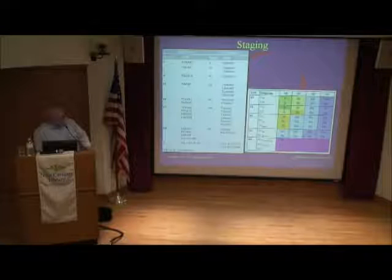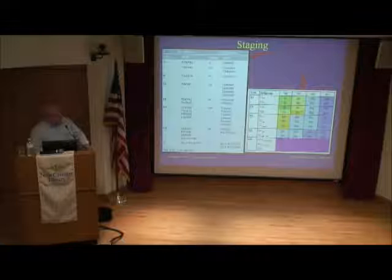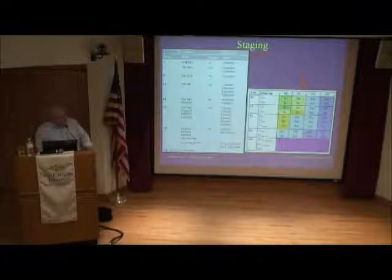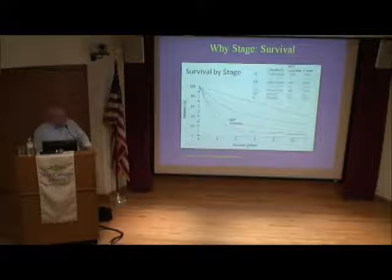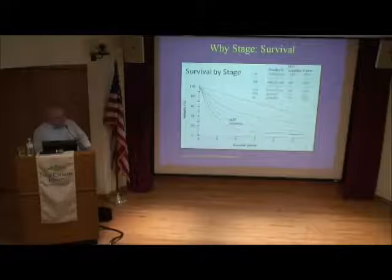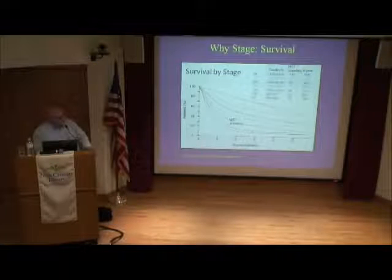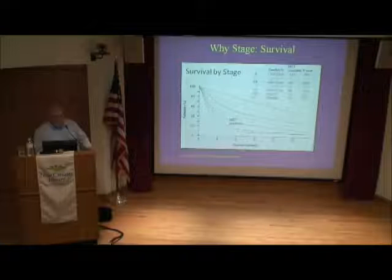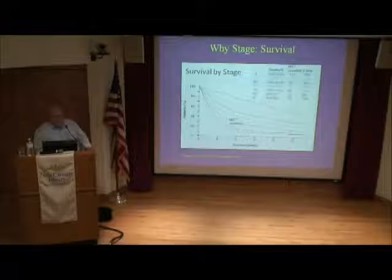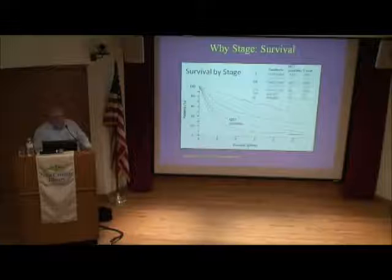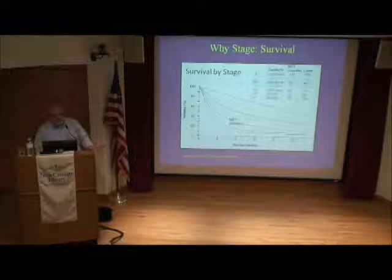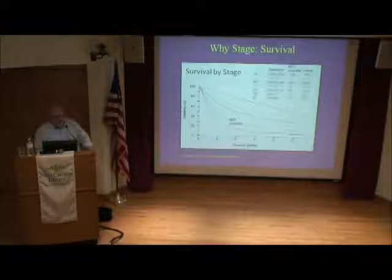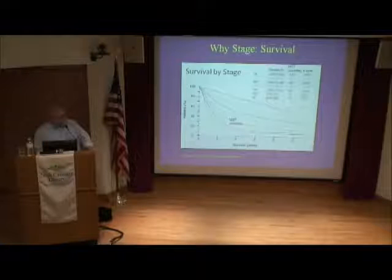Lung cancer staging uses a complex T/N/M system with ones, twos, threes, fours, A's and B's, revised every five to seven years. The higher the stage, the lower the survival. Five-year survival for stage 1A is six times that of stage 3B or 4. Unfortunately, 75% of US lung cancer diagnoses are at stage 3B or 4. Until recently, early-stage diagnoses were largely incidental—found during a car accident X-ray or pre-surgical imaging.